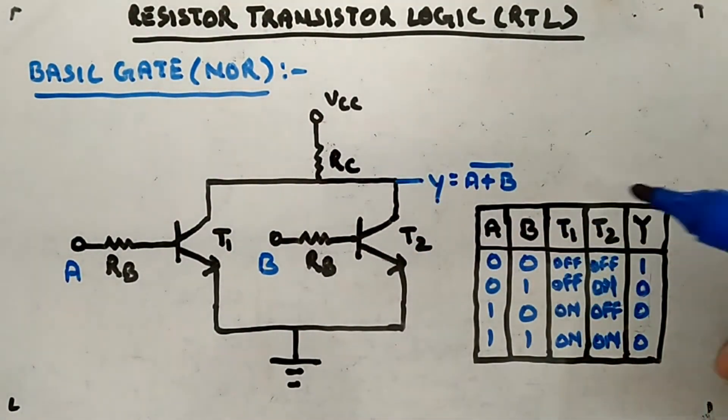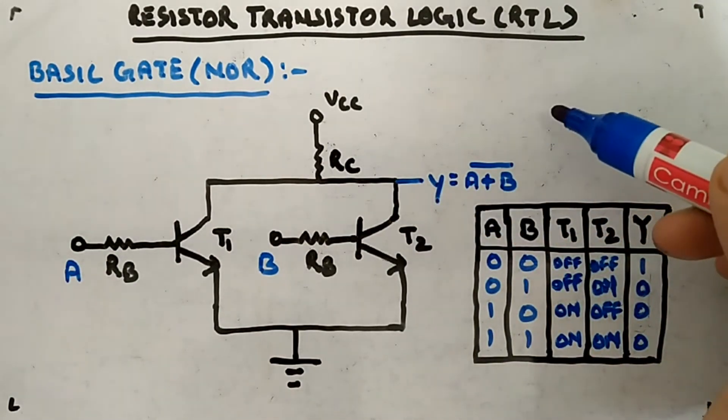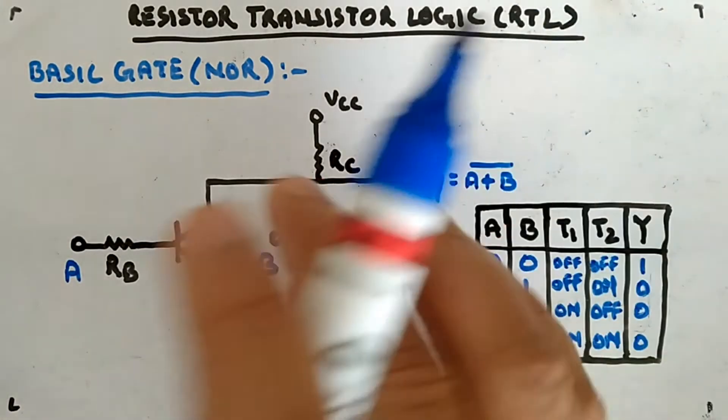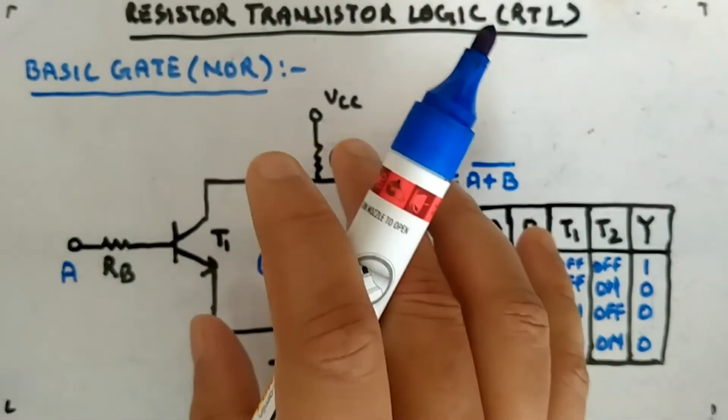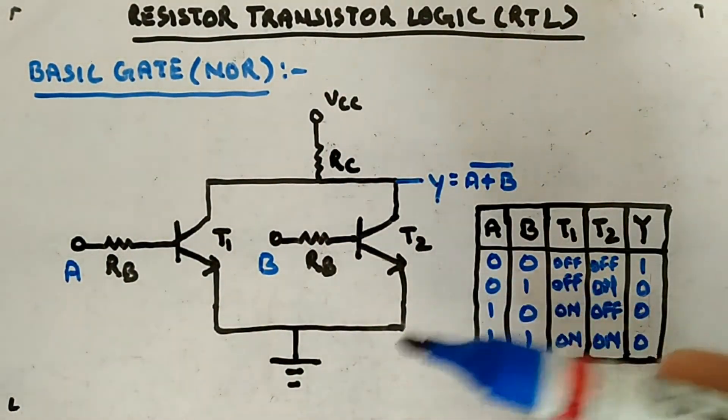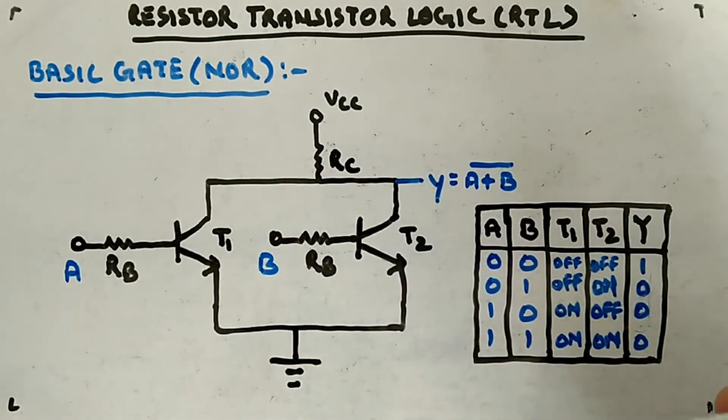If you have to make an OR gate, you have to provide an inverter in front of this. The inverter will be made like I just made. Ultimately what I want to say is you will use only NOR gate as a basic gate in resistor transistor logic to design all other gates. This is the standard circuit.